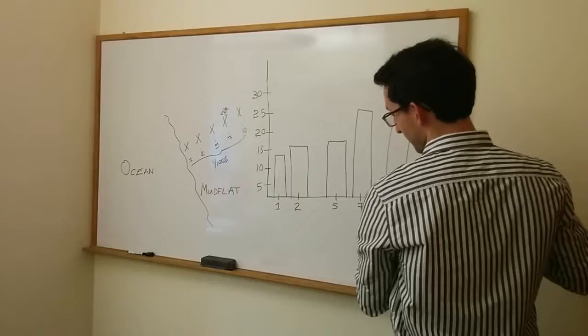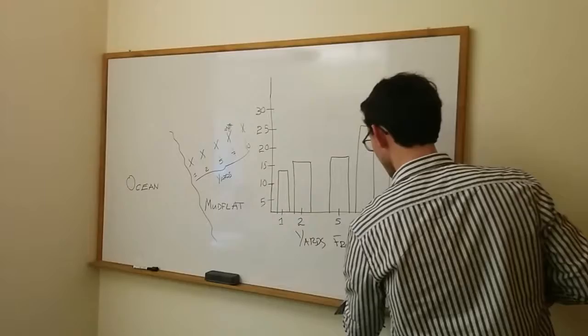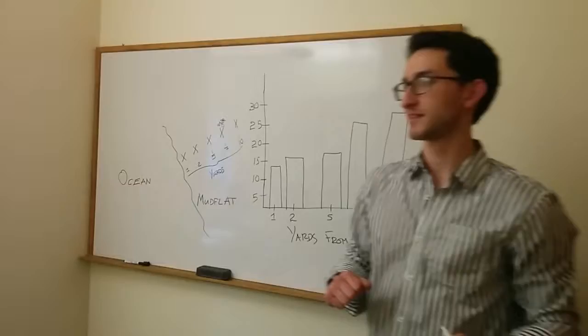Can you tell me what I should write here for this label, what these numbers correspond to? That's the number of yards. Yes, yards from ocean. And how about here, what are these numbers? The number of crustaceans. Yes, number of crustaceans.